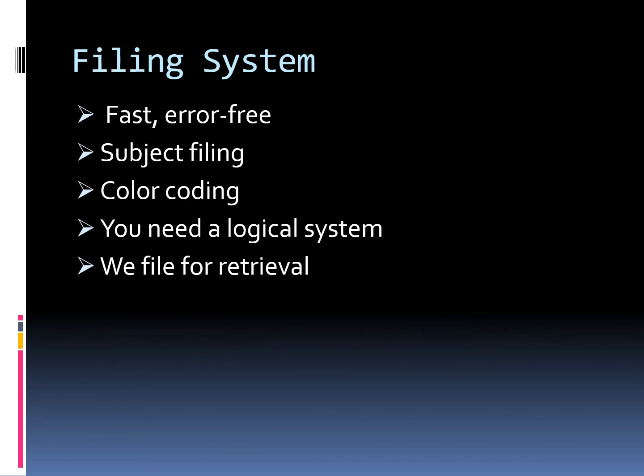The filing system is an important component of any record management system. An effective filing system is fast, error-free, uses subject filing and color coding, follows a logical system, and is designed for efficient retrieval.